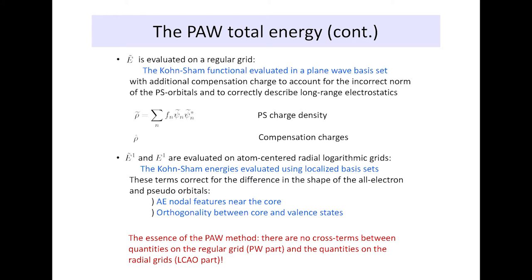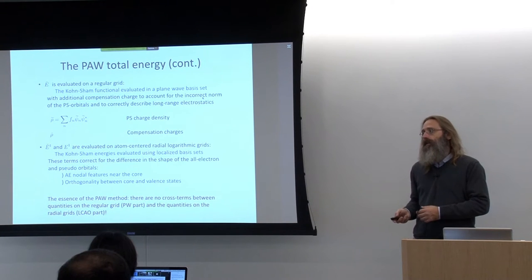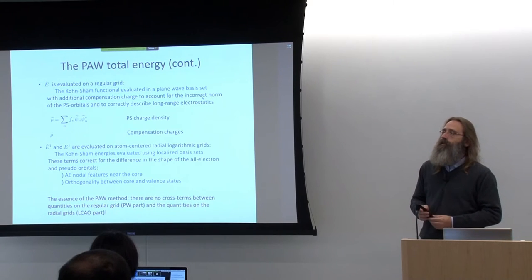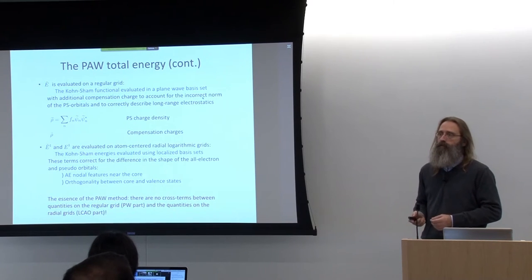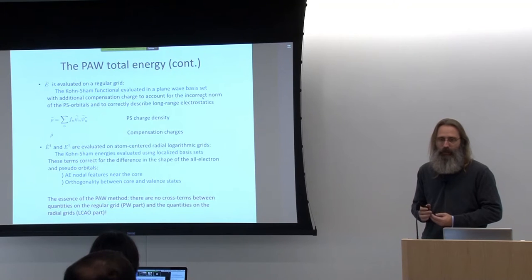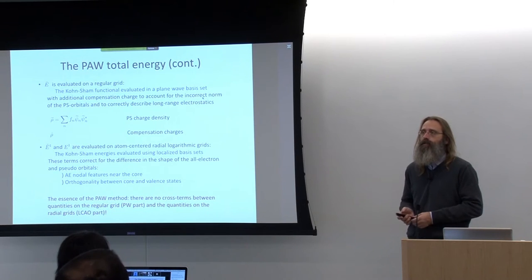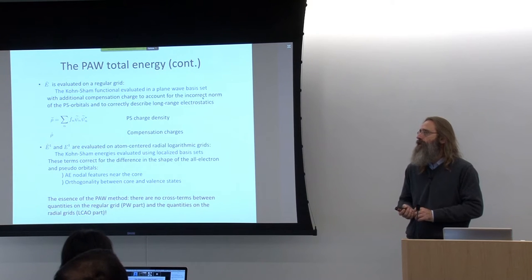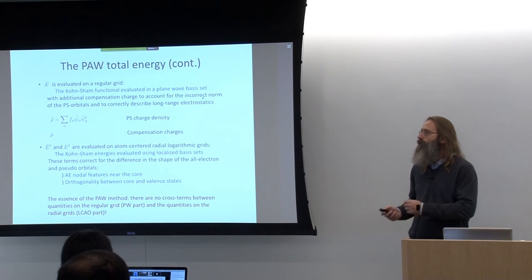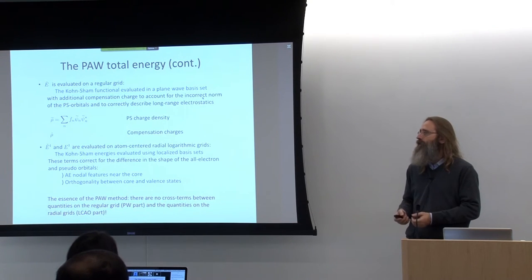The essence is that we never put quantities on one common grid — we never try to put radial functions onto the plane wave grid or vice versa. Otherwise the method would immediately break down. We get a lot of questions because people would like to visualize the PAW wave function, but the answer is actually you cannot. Because of the way the PAW method works, to visualize it would mean bringing everything onto a common grid to reconstruct the wave function, which is never explicitly done.